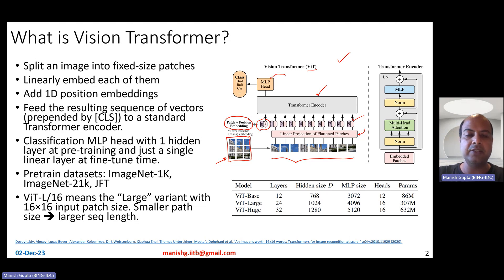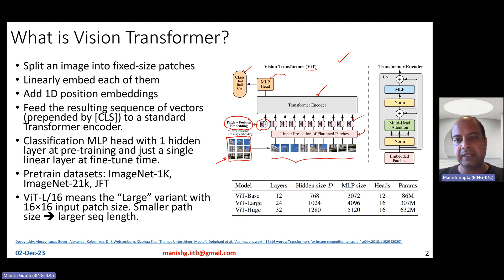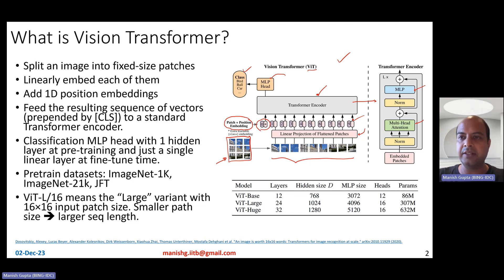At the end, you have an MLP head to essentially perform the classification task. At pre-trained time, they have an MLP head with just one hidden layer, while at fine-tune time you can connect the Transformer Encoder CLS representation directly to the output layer. The Transformer Encoder contains multi-head self-attention and a feed-forward network across several layers — that's basically the overall model architecture.